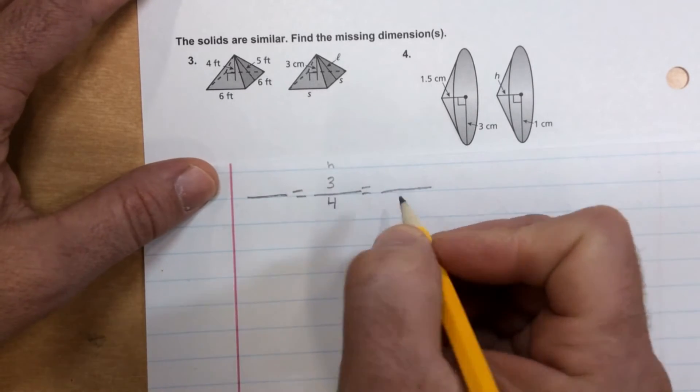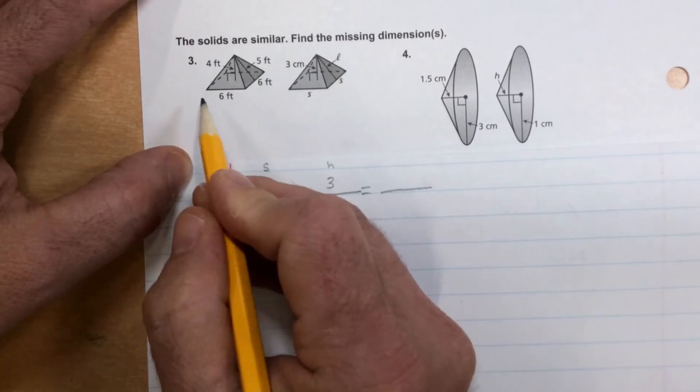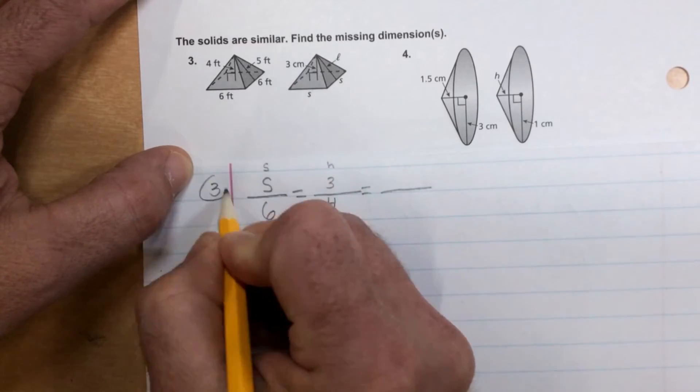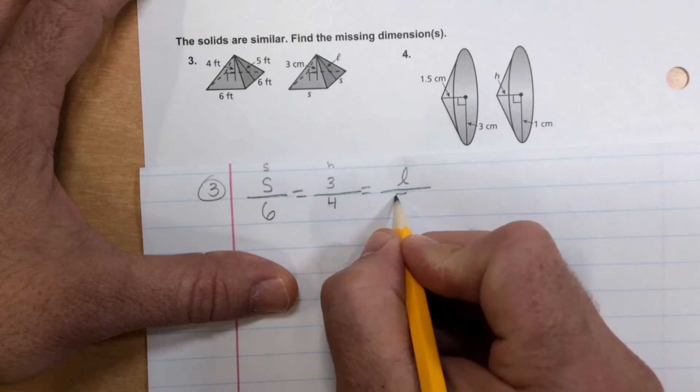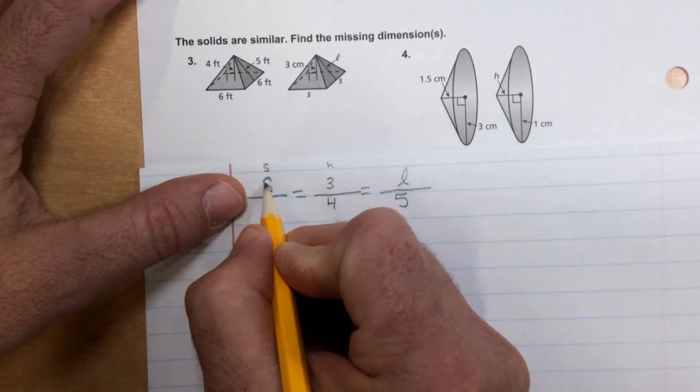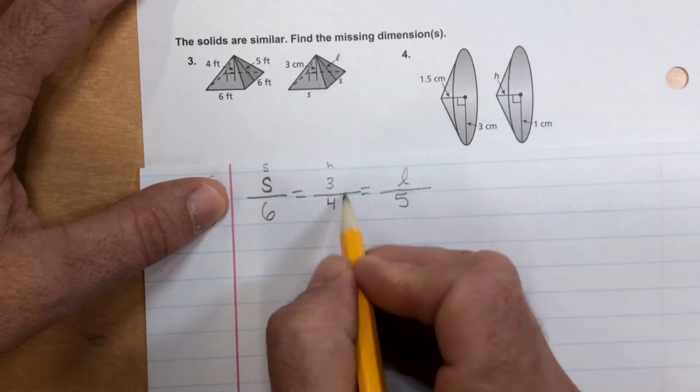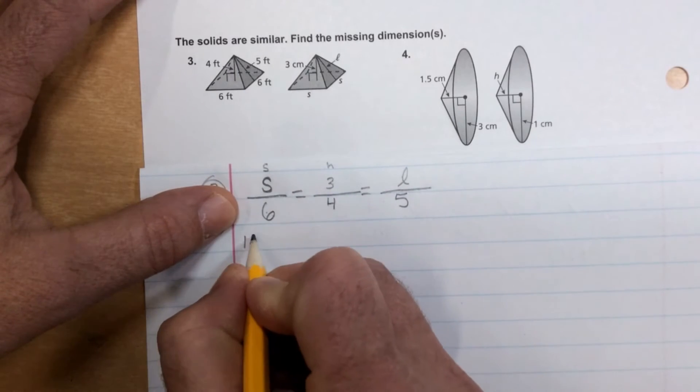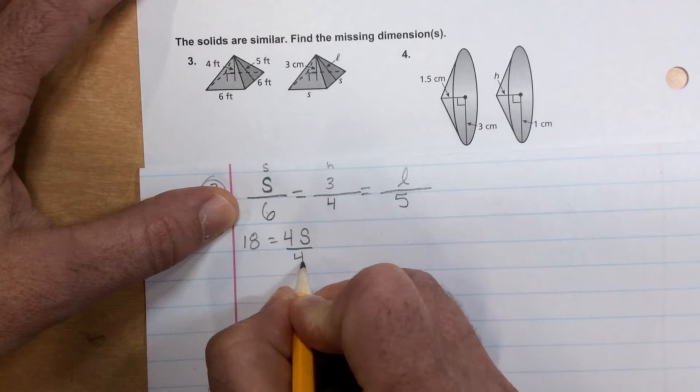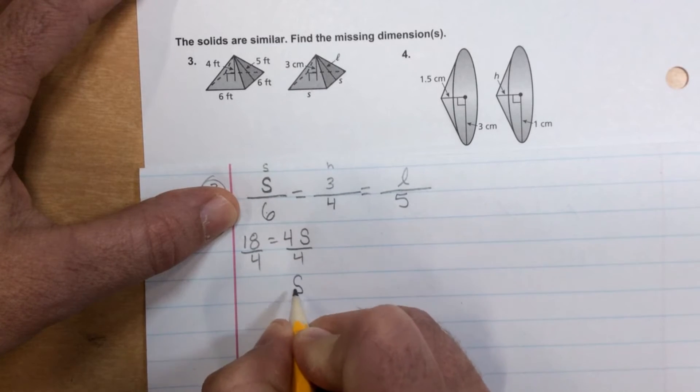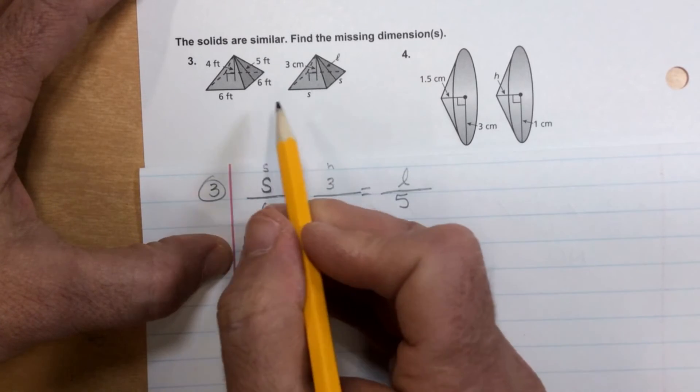I'm going to put a little H up there so we remember that's the height. A little S up here because that's the side length. For the little one, we just have S because we don't know it. Over here, we have six. And for the slant height, we have L over five gives us five for the slant height. So now we have to find out what this is. Make sure your S looks like an S and not a five. So I have three times, we know this forms a proportion because it tells us they're similar. So three times six is 18. S times four is four S. Divide both sides by four. And you're left with S equals 18 divided by four is 4.5. And of course, that would be centimeters.